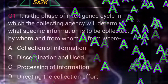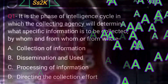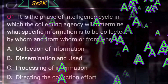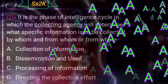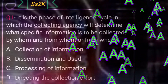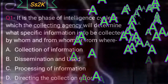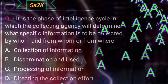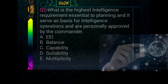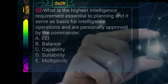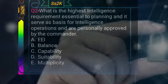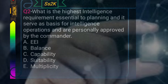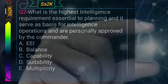The following factors must be considered in a collection plan: who will collect the information, what specific information will be collected, where the places are where information shall be collected, when is the right time to gather information, how the information shall be collected, and why it should be collected — is it important? Those are the things examined in a collection plan. Question number two: What is the highest intelligence requirement essential to planning, which serves as the basis for intelligence operations, and is personally approved by the commander?